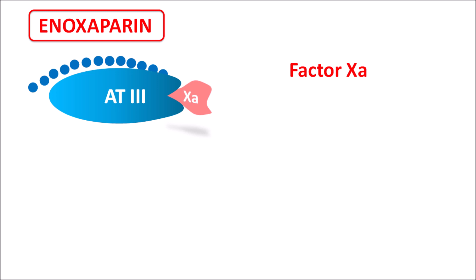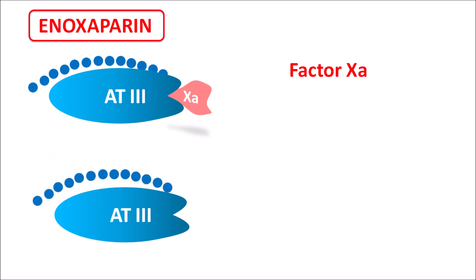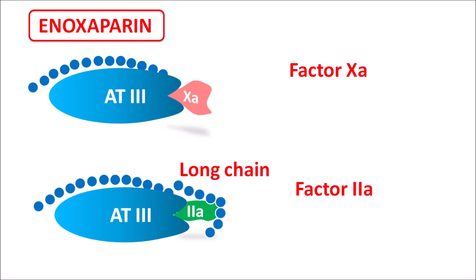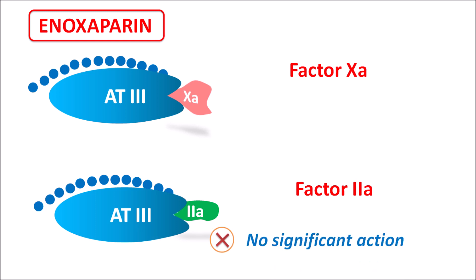Regarding the action on Factor 2a: enoxaparin binds to antithrombin 3 and stimulates its activity, and Factor 2a can bind to this complex. However, this is not sufficient for complete inhibition — an extra long chain is required to bind both antithrombin 3 and Factor 2a simultaneously. Since enoxaparin lacks this long chain, it cannot significantly inhibit Factor 2a. This is why enoxaparin mainly inhibits Factor 10a, resulting in decreased clotting.